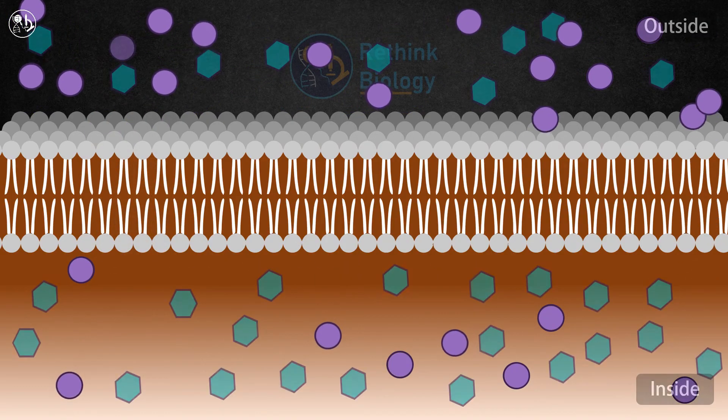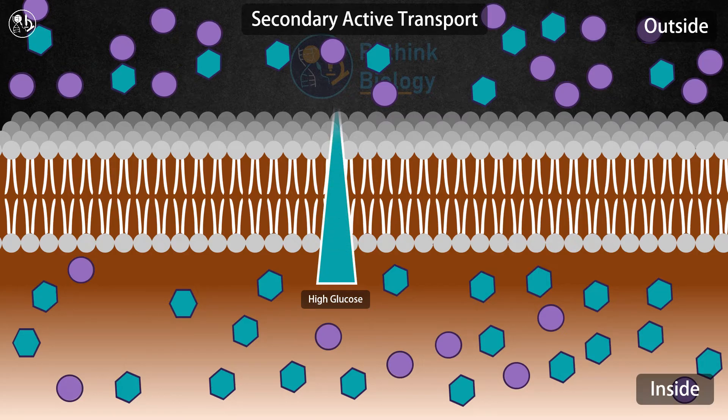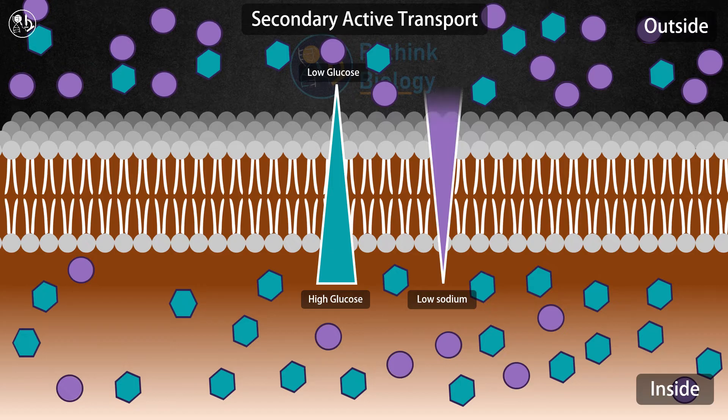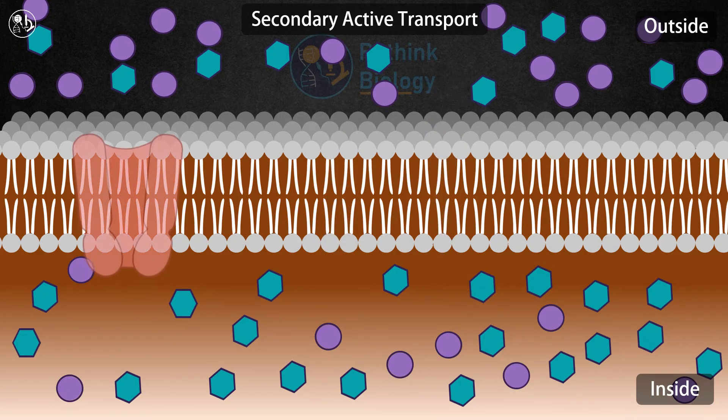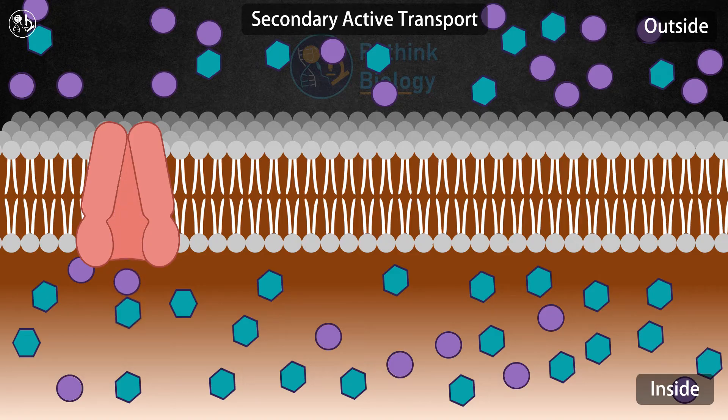Secondary active transport is another way a cell can move substances against their concentration gradient. In this process, a symport protein is used to move a substance like glucose against its concentration gradient. The protein takes up both sodium and glucose from outside the cell and then changes shape, depositing both substances inside the cell.